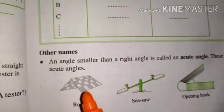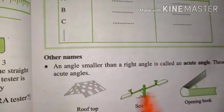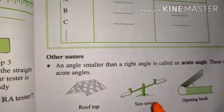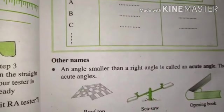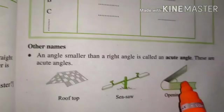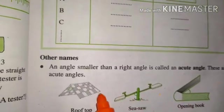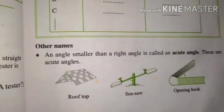Jaise roof ka top hota hai, example mein, seesaw, ye bahut bachche khelte hain isme, jhula jhula pasand karte hain, is par baithke. Opening a book, itna book agar aap open karenge, toh ye sare, ye sare examples hain, hamare acute angle ki.